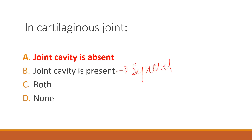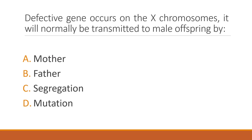If a defective gene occurs on the X-chromosome, it will normally be transmitted to male offspring by whom? The correct answer is option A: the mother.